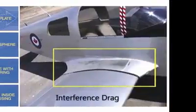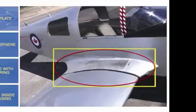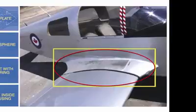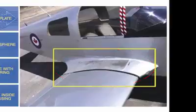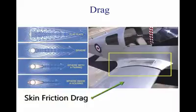Interference drag comes from the intersection of airstreams that creates eddy currents, turbulence, or restricts smooth airflow. For example, the picture on the right shows the intersection of the wing and the fuselage at the wing root. This area has significant interference drag. Air flowing around the fuselage collides with air flowing over the wing, merging into a current of air different from the two original currents. Skin friction drag comes from the surface of the aircraft not being completely smooth. Even though a surface may look smooth, it has a rough, ragged surface when viewed under a microscope, causing an interruption in airflow and more drag.